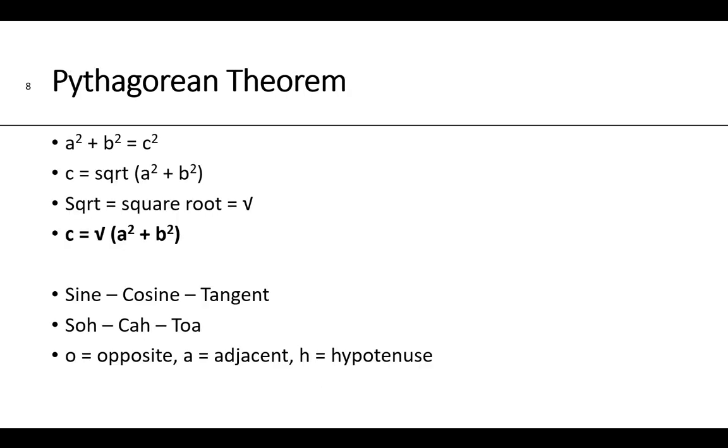Again with right triangles and trigonometry we can use the Pythagorean theorem which says a squared plus b squared equals c squared. Using simple algebra we can solve for just c, and c is the square root of a squared plus b squared. Again the sine, cosine, and tangent are SOH CAH TOA where O is opposite, A is adjacent, and H is hypotenuse.